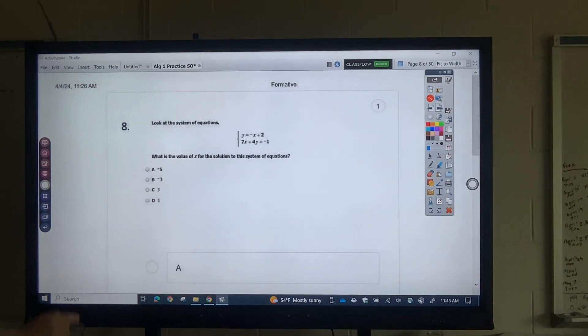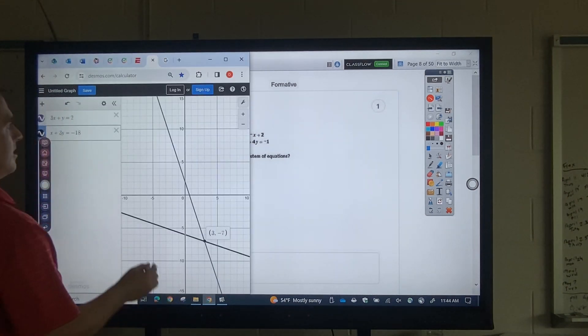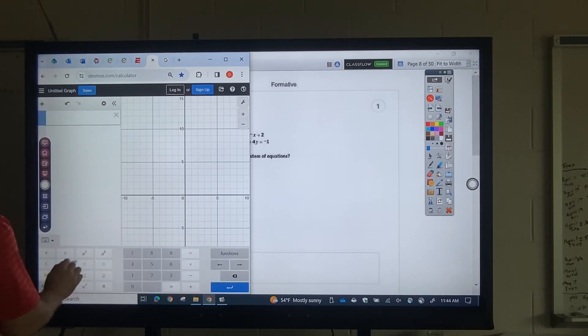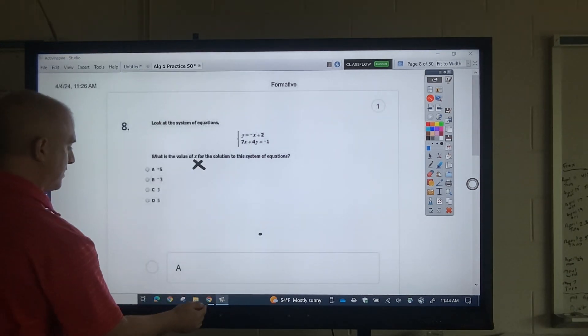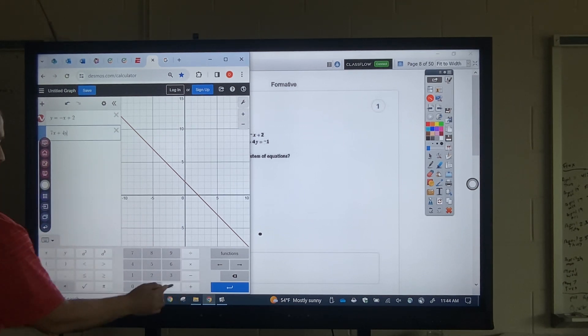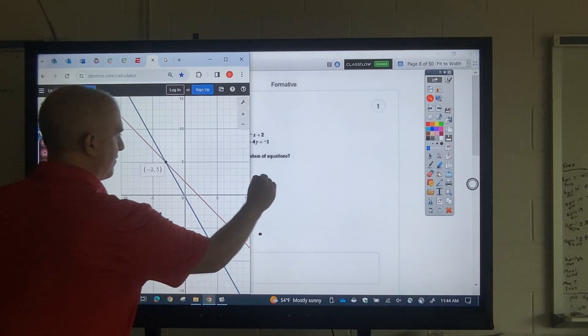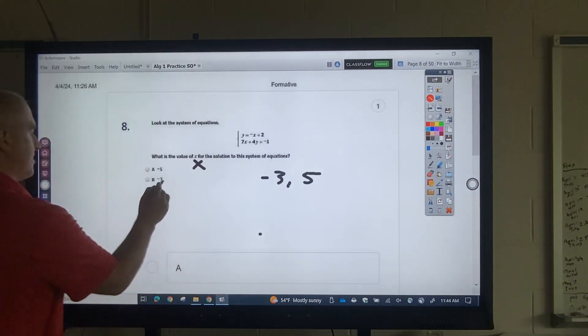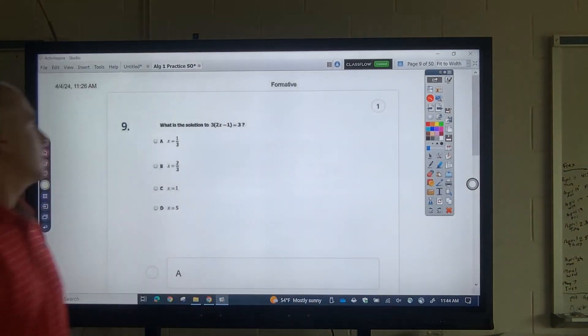All right, same deal. I just got to read for comprehension. It says, what is the x value? Okay, so I put these both in there. All right. That's 7x plus 4y equals negative 1. Okay. Negative 3, 5. Okay. So it says, what's the x value? Well, that would be negative 3. Because this is x, this is y.